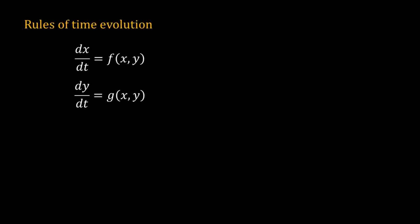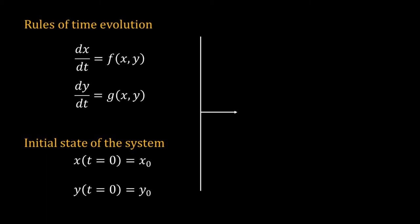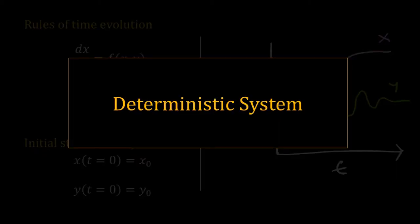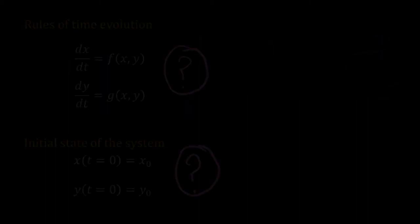Until now, we have used ordinary differential equations to understand the dynamics of a system. We have a system of ODEs that represents the rules of time evolution of the system, and we have the initial condition. With these two information—rule of time evolution and the initial state of the system—we can exactly predict the state of the system in future. This type of system or process is called a deterministic system.